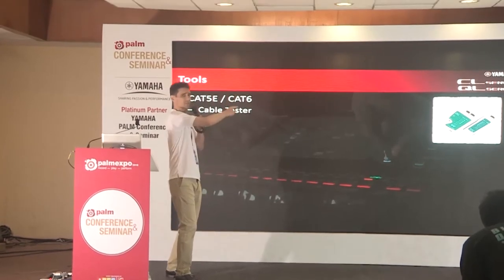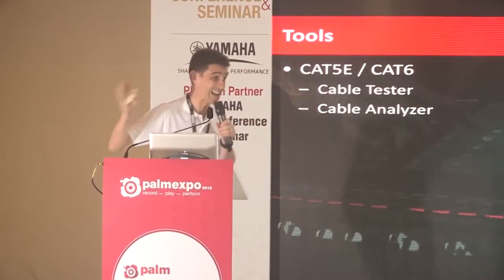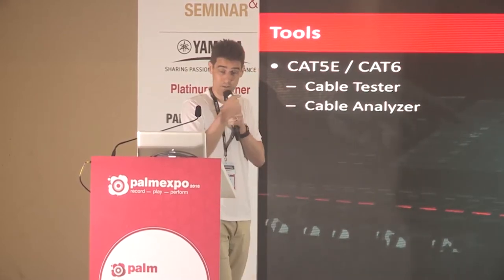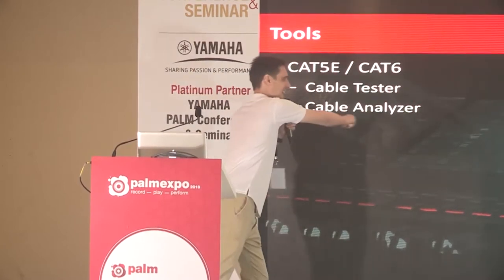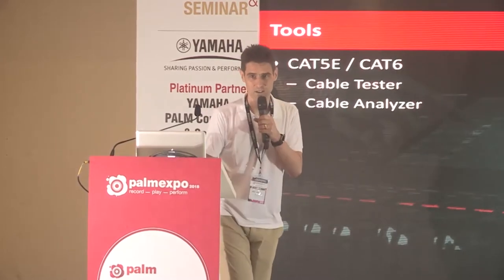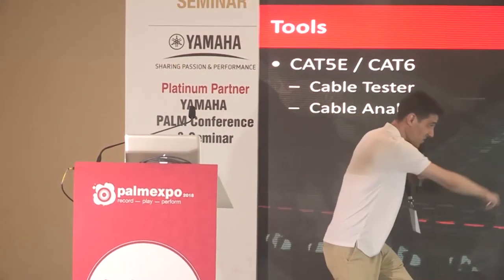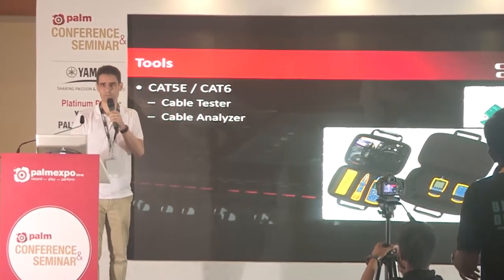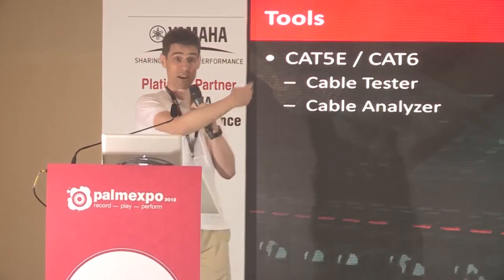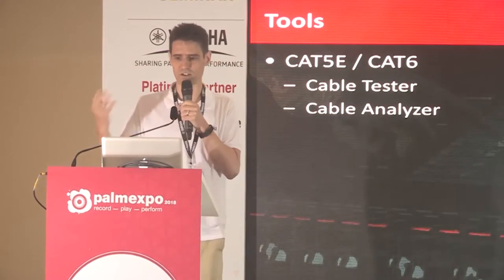I recommend you have some kind of cable tester, or better yet, a cable analyzer. A cable tester will check if you get signal from one end to the other. A cable analyzer will tell you how much data the cable can carry — whether it's suitable for 100 megabits per second or 1000 megabits per second. A cable analyzer can even tell you where there is damage in the cable — for example, after 10 meters. Then you know you can cut the cable at 10 meters, make a new termination, and have a shorter but reliable cable. Every network engineer should carry these tools.